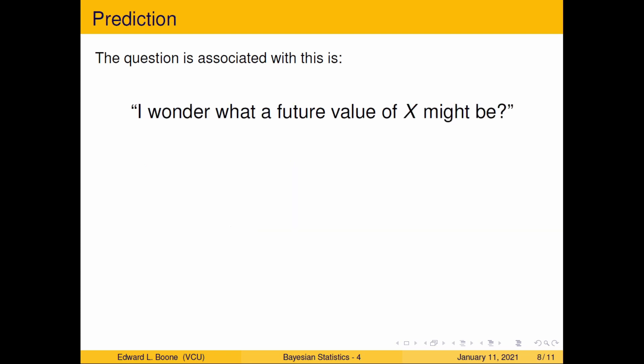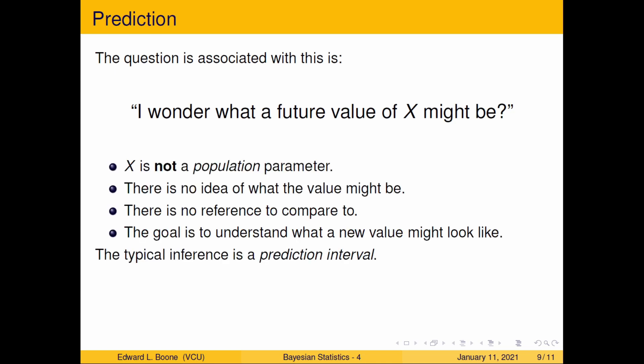Prediction is: I wonder what a future value of X might be. X is the thing you're measuring—a fish, a dog, nitrogen in the atmosphere, I don't know—but what a future value might be, one that I haven't witnessed yet. X is not a population parameter; it's a member of the population, but it's definitely not the population.